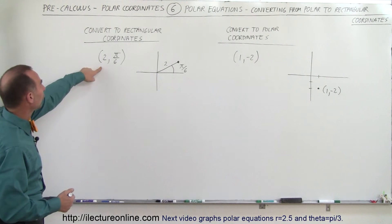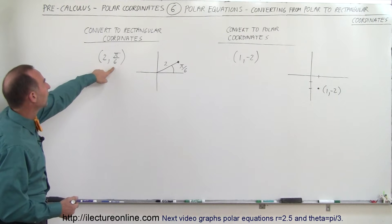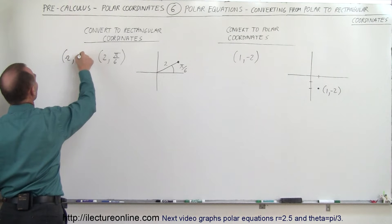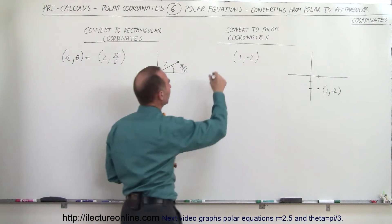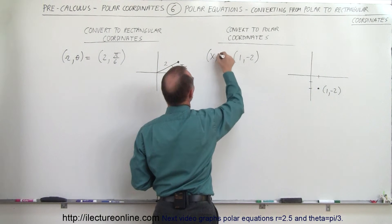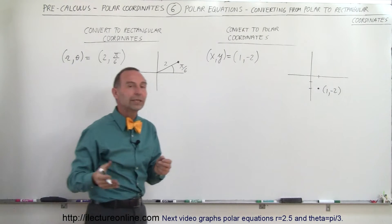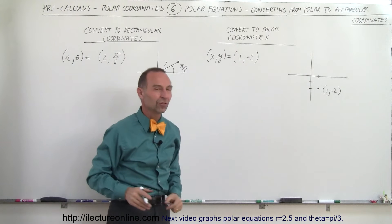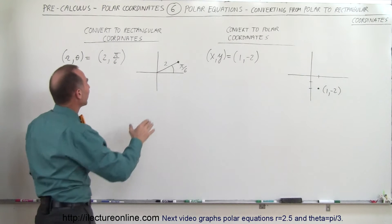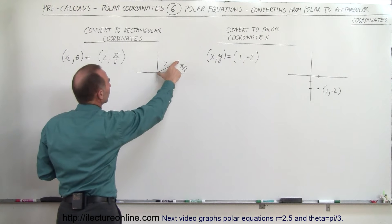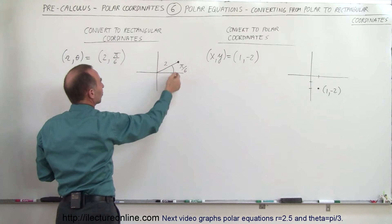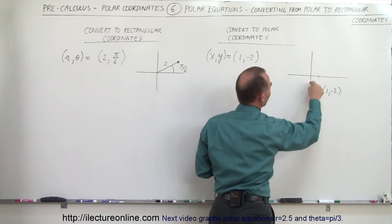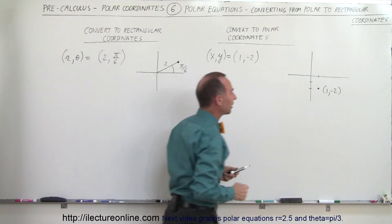Here we have polar coordinates: R equals 2, theta equals pi divided by 6. We write it as (R, theta). And here we have rectangular coordinates (X, Y). For the polar point, the radius is 2 and the angle is pi over 6, or 30 degrees. For the rectangular point, X equals 1 and Y equals minus 2.